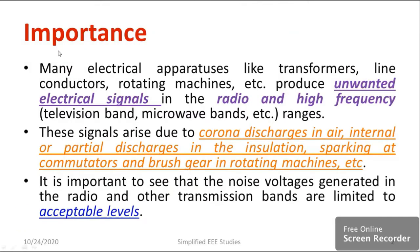First and foremost, I would like to discuss the importance of measurement of radio interference. Many electrical appliances like transformers, line conductors, and rotating machines produce unwanted electrical signals in the range of radio and high frequency — for example, television band, microwave, and more than megahertz. These signals will directly interact with the communication channel and distract the signal passing through it. These signals are produced due to corona discharges in air, internal or partial discharges in the insulation, and sparking at commutators and brush gear in rotating machines.